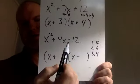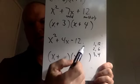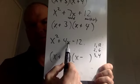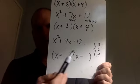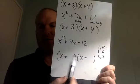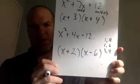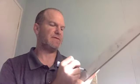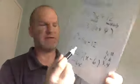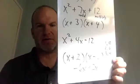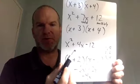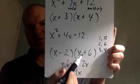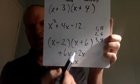When the last term is negative, instead of adding you're subtracting — you're adding a negative. So which pair subtracts to give 4? That's 2 and 6. Now the order matters: if you write X plus 2 and X minus 6, you get negative 6X plus 2X = negative 4X — but we want positive 4X. So the 6 must be positive and the 2 negative: X plus 6 and X minus 2 gives positive 4X.